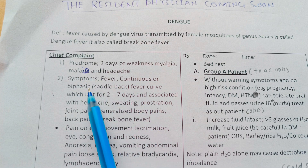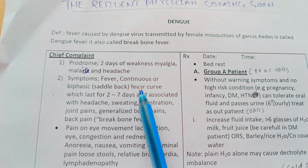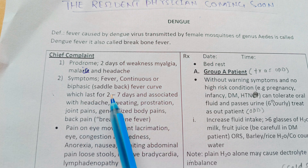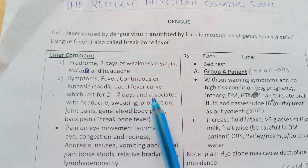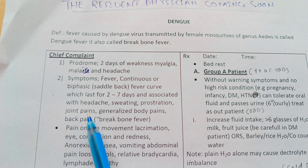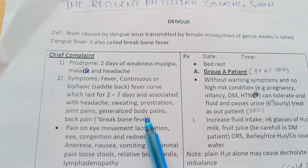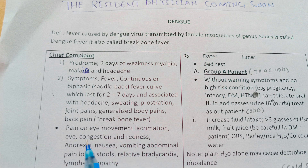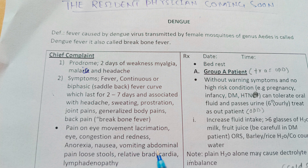Symptoms include fever — continuous or biphasic saddle-type fever curve — lasting two to seven days, associated with headache, sweating, prostration, joint pain, generalized body pain, and back pain, which is why it is called break bone fever. Other symptoms include pain on eye movement, lacrimation, eye congestion and redness, anorexia, nausea, vomiting, abdominal pain, loose stools, relative bradycardia, and lymphadenopathy.